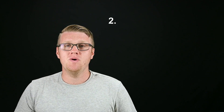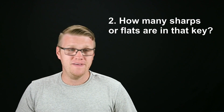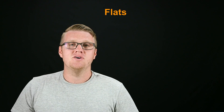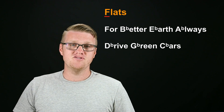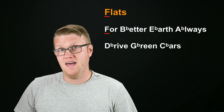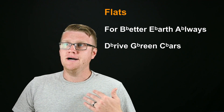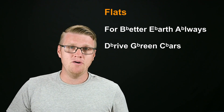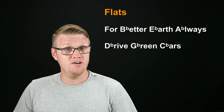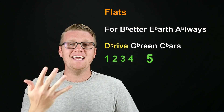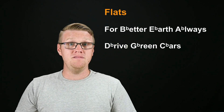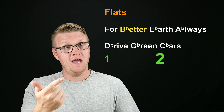Step two is knowing how many sharps or flats are in that key or scale. I use two mnemonic devices to determine that. The first one is for flats: 'for better earth, always drive green cars.' I remember it's for flats because flat starts with F, and the first word in that mnemonic also starts with F. For example, to spell the key of D flat, count up until you hit D: for, better, earth, always, drive — that key has five flats. For the key of B flat: for, better — that key has two flats.